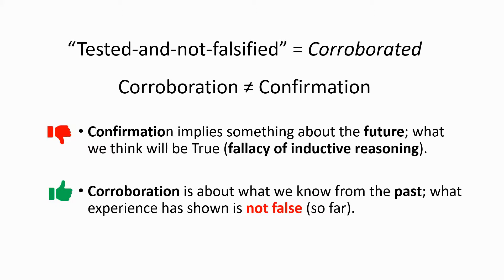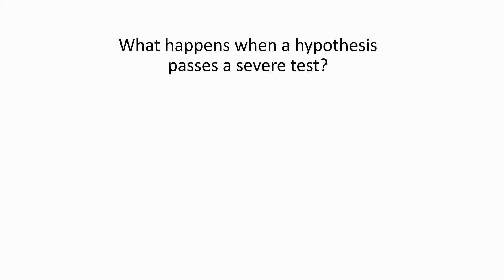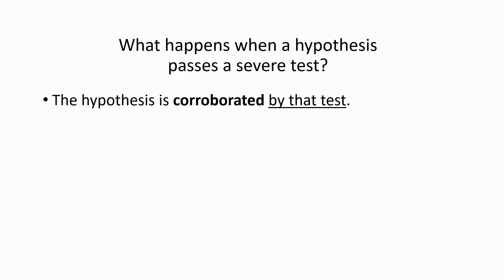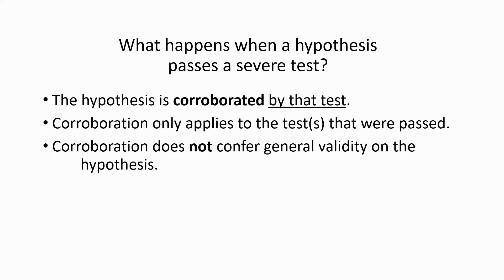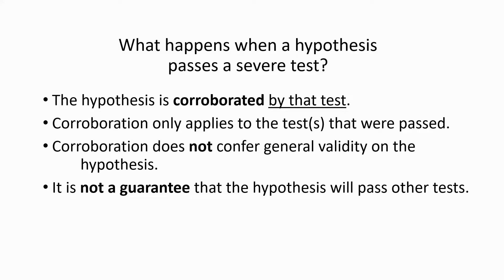We may believe a hypothesis will be true in the future, but we must keep our beliefs separate from our knowledge. When a hypothesis passes a severe test, strictly speaking, it is corroborated by that test, and corroboration only applies to the tests that were passed. Corroboration does not confer general validity on the hypothesis, and it's not a guarantee that the hypothesis will pass other tests. These are the severe logical standards we're obliged to live by, but they do not exclude the understandable psychological factors of confidence we might feel in a hypothesis that passes many tests — and we'll come back to those issues in later videos.